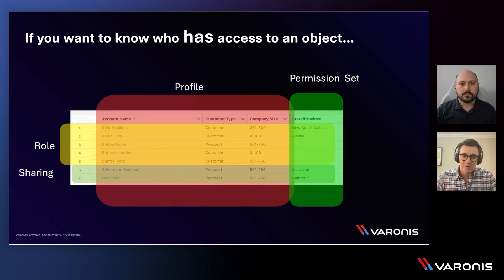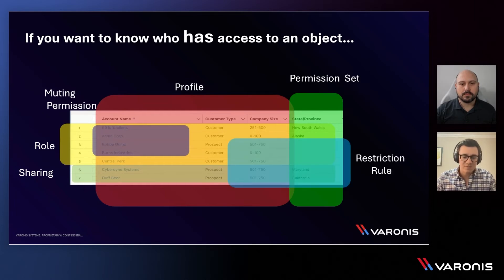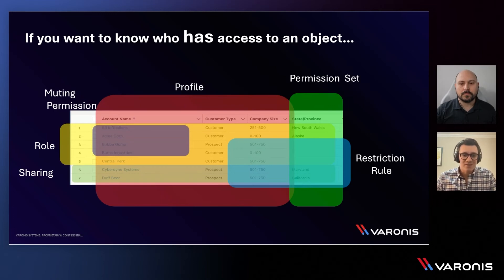But ultimately, maybe down the line, we need to start pairing some of those permissions back. That's where we can bring in things like muting permissions, which might take away some of those permission set attributes, and also restriction rules that might take away some of the sharing permissions we already have. Now you can see that the aggregate of all these different types of entitlements and permissioning objects gives us the overall effective access of this user within the environment.